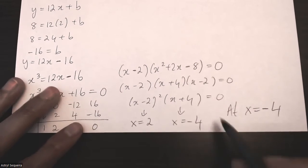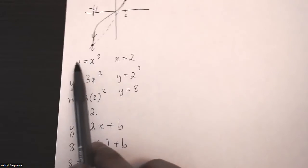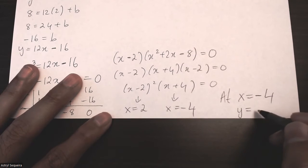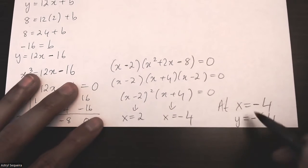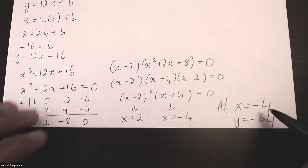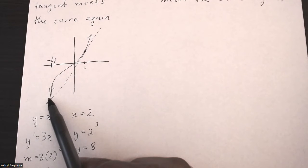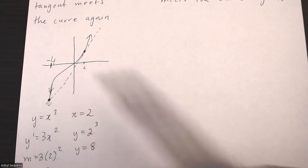Since x equals 2 was already given, the x value of the new intersection point is negative 4. To find the y value, substitute into the original equation: negative 4 cubed gives y equals negative 64. You can write the answer as just x equals negative 4, or give both coordinates — the tangent meets the curve again at the point negative 4, negative 64.